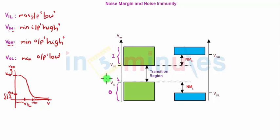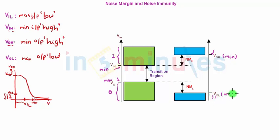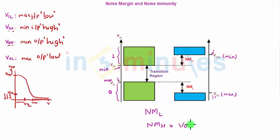This is nothing but max, this is nothing but min. If the output is here it will be interpreted as logic 1, but it has still some scope above, so this is again min. If the output is here it will be interpreted as logic 0, but it has still scope to go down, so this is max. Noise margin low and noise margin high can be easily obtained from this curve: NMH is nothing but VOH minus VIH, and NML is nothing but VIL minus VOL.